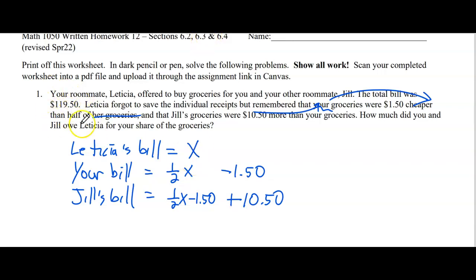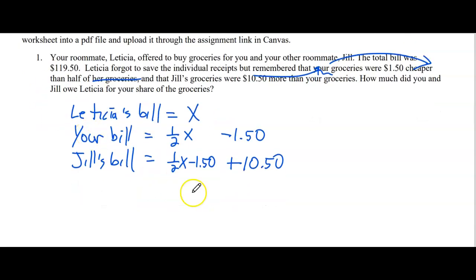The total is $119.50, so if you add all those up, you should get that total. Then you can solve for X. Once you have X, how much did you and Jill owe? You plug X back into your bill and Jill's bill, and then you can get the two values that you and Jill owe to Letitia.